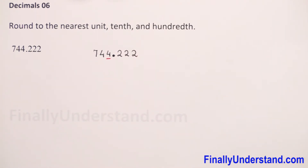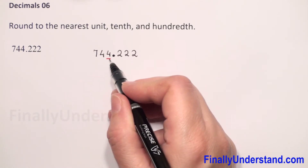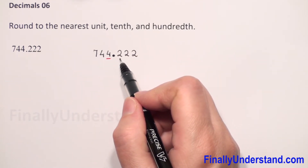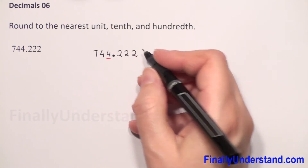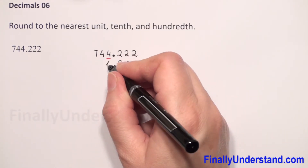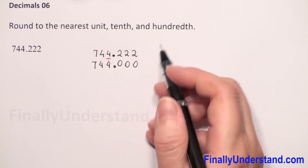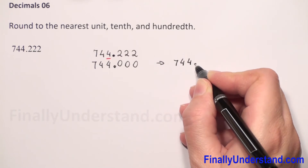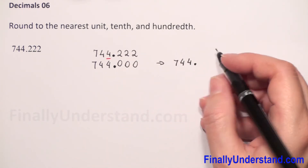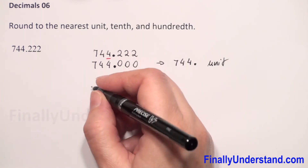The next step is we have to check the digit which is after our underlined number — it is 2. When we have less than 5 after the underlined digit, we keep the same digit and every digit after the underline will now be 0. So the 2 we change to 0, the next 2 also, and the third 2 as well. The decimal point we copy and the rest. So when we round our number to the nearest unit we get 744. We don't need the zeros after the decimal point because they don't change the value of our number.